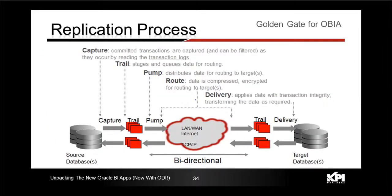How does the replication process work with Golden Gate? It extracts data based on logs created within the source database, captures that, creates a set of files, moves them over to the target database, and then applies the delta or change data into the schema you have identified where it needs to reside.